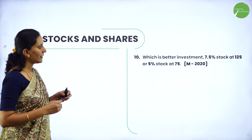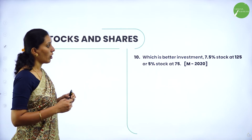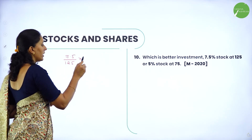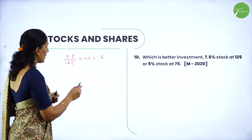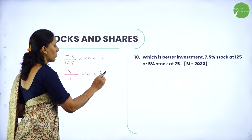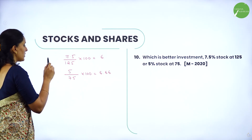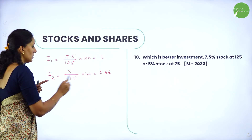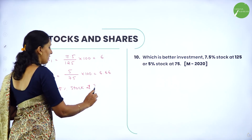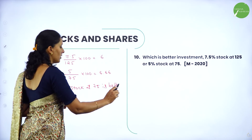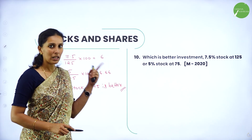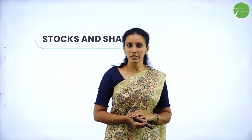Next question: which is better investment — 7.5% stock at 125 or 5% stock at 75? For 7.5% stock at 125: yield = 7.5/125 × 100 = 6. For 5% stock at 75: yield = 5/75 × 100 = 6.67. Since yield is more in the second case, 5% stock at 75 is the better investment.